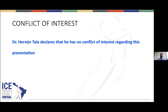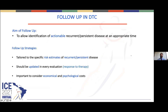I have no conflict of interest regarding this presentation. The aim of the follow-up of patients with differentiated thyroid cancer is to identify actionable recurrent or persistent disease at an appropriate time. Follow-up strategies should be tailored to specific risk estimates of recurrent or persistent disease, updated at every evaluation according to response to therapy, while also considering the economical and psychological cost of follow-up. We should balance this cost with the likelihood of finding recurrent disease.